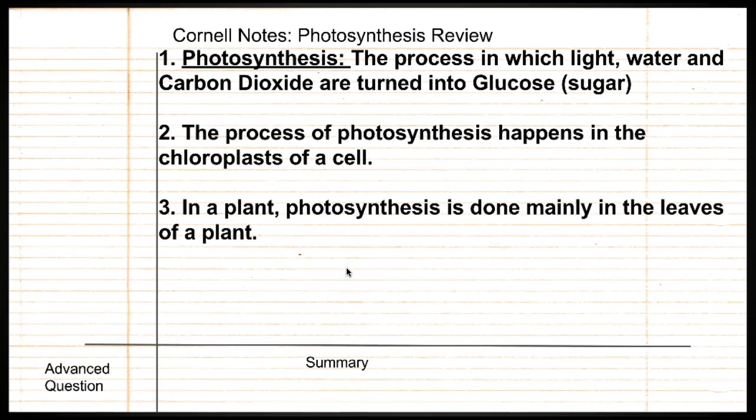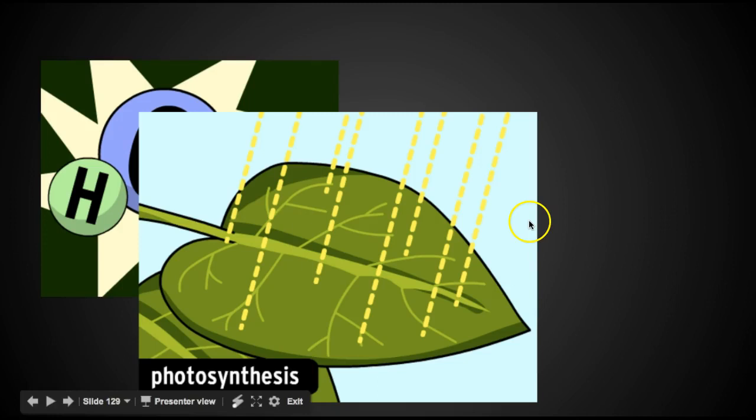Number three. In the plant, photosynthesis happens in the leaves of the plant. So if you were to cut the leaves off of a plant, it would die slowly because it cannot photosynthesize anymore and make food for itself.